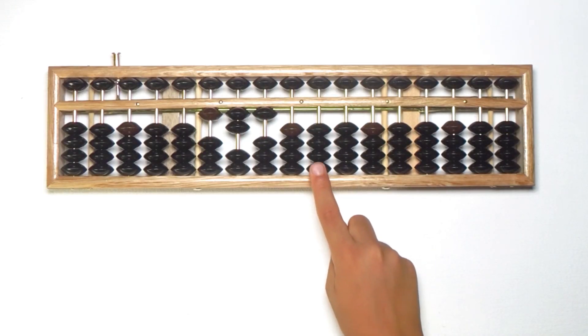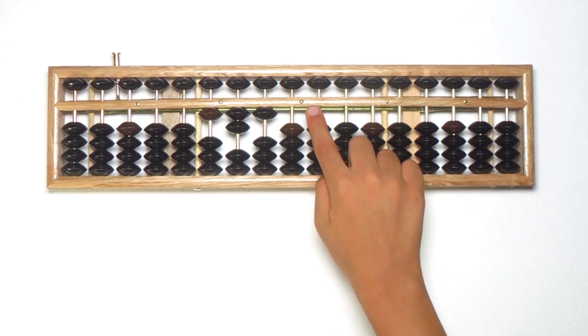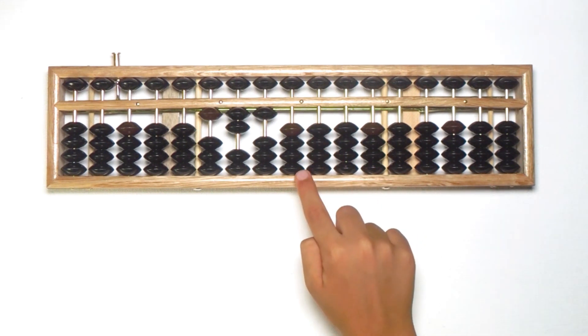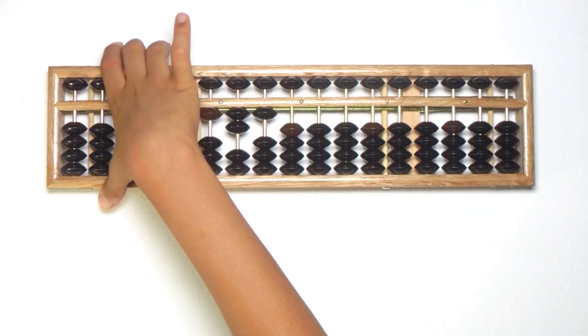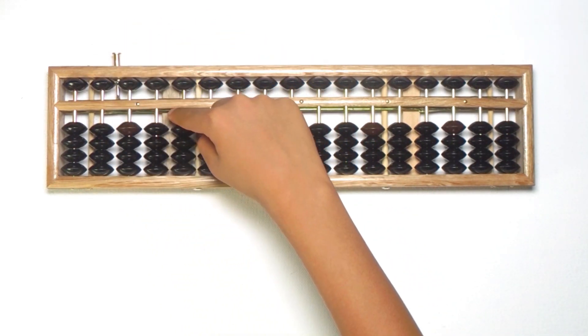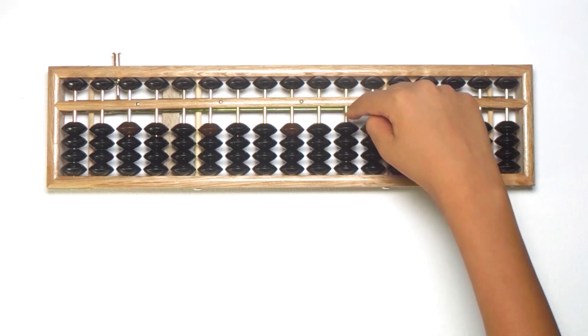In Abacus, we shall start counting number from unit place dot. This is the place from here we shall start counting numbers. In maths, the first smallest number is zero. So let me start counting with the zero. You can see in Abacus, I have cleared so none of the beads are touching the bar. It says zero.